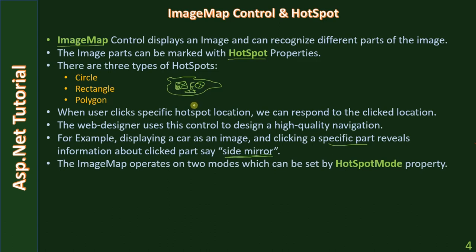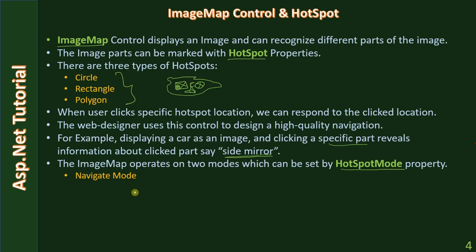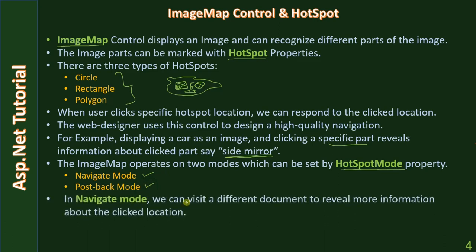The image map control operates in two modes which can be set by the HotSpotMode property. The hotspot defines the parts of the image — rectangle, circle, or irregular shape using polygon points. Using the HotSpotMode property you can define how the image map control will respond to the clicked hotspot. The HotSpotMode property accepts two values: navigate mode and postback mode.